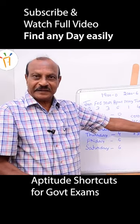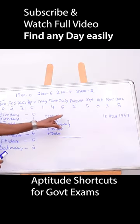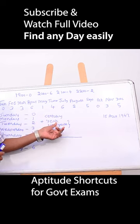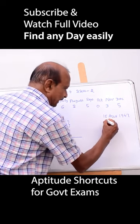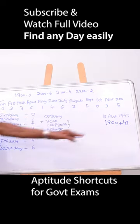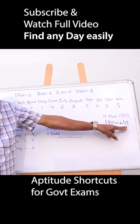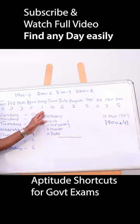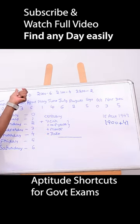So how to find out this from this formula. I have written here: century year plus number of leap years plus month plus date. Write 1947 as 1900 plus 47 — this 1900 represents the century, this 47 represents the year. So the formula is: century plus year plus month plus date.